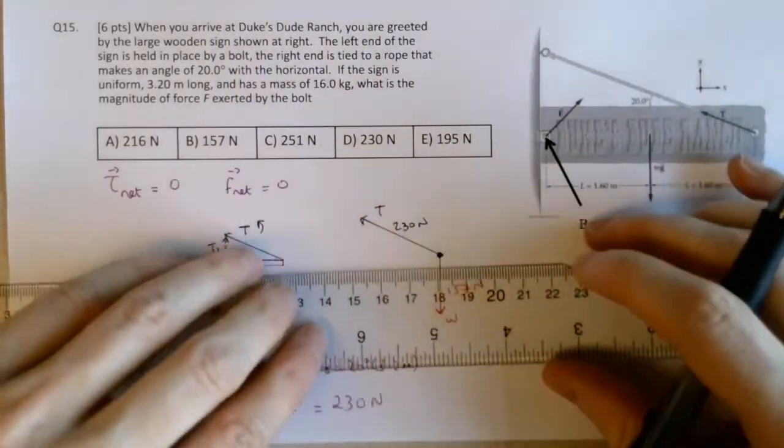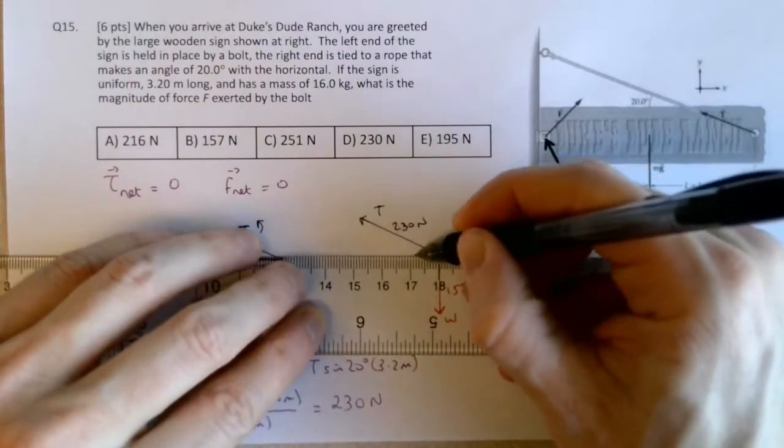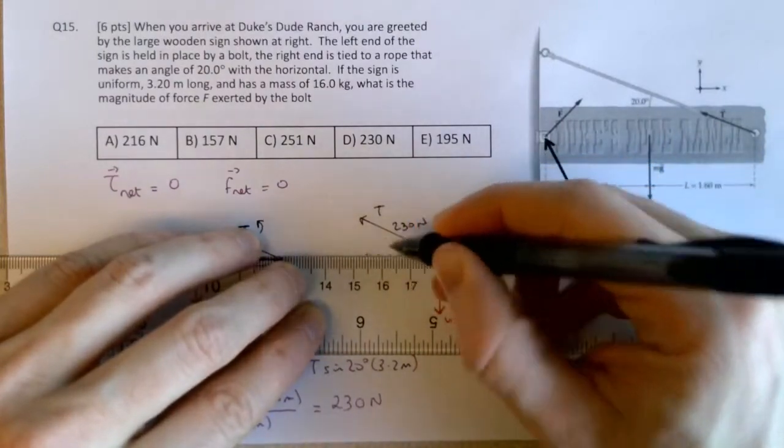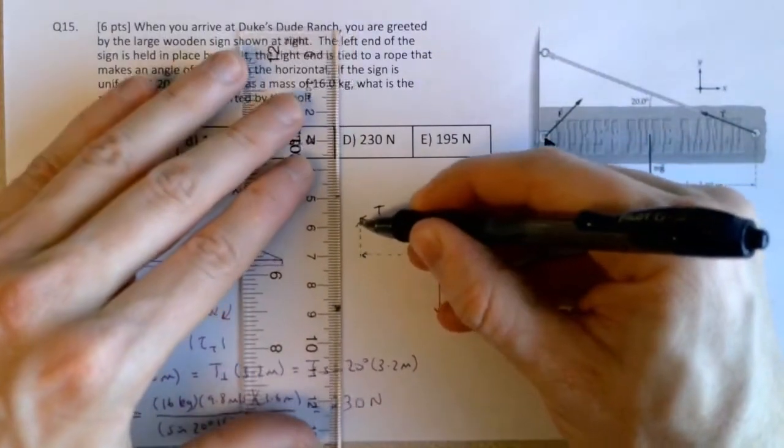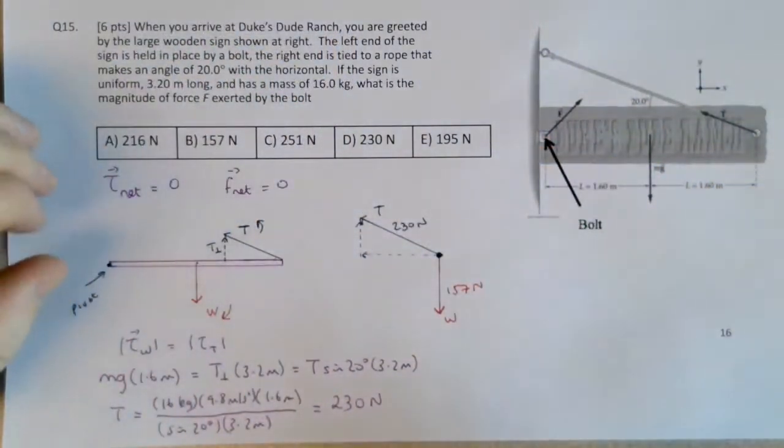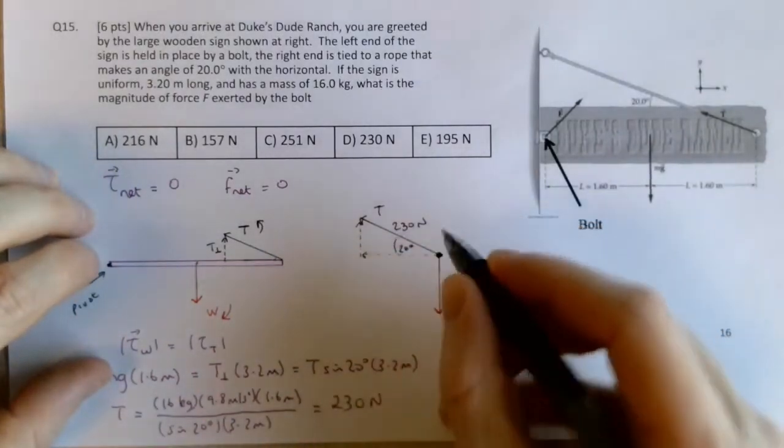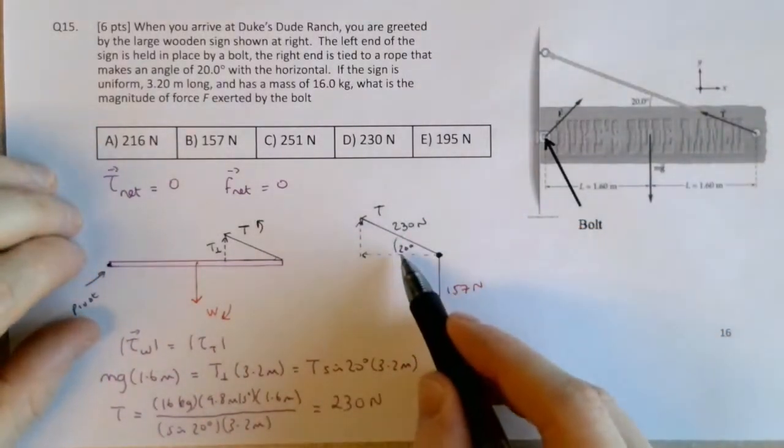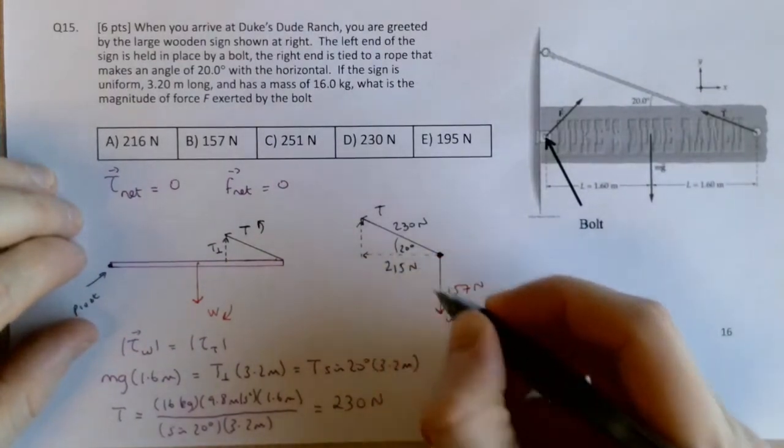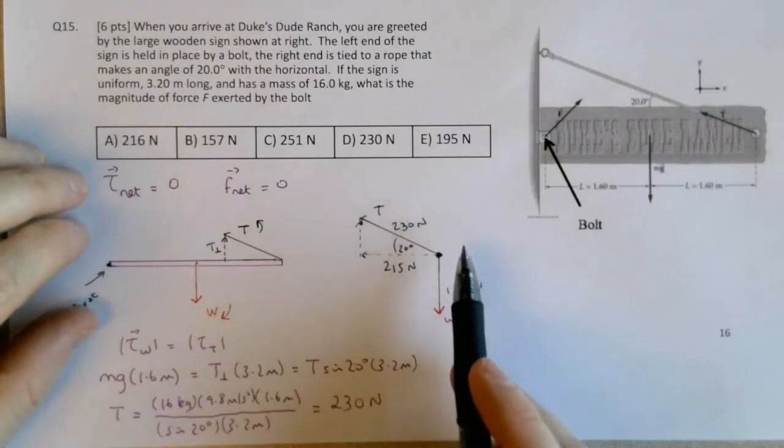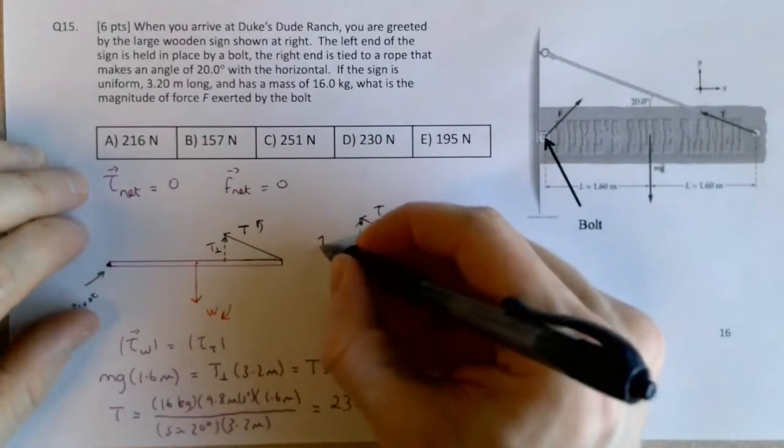And we know that this is going to be 16 times 9.8, so it's 157 newtons. And this is the tension force, which we now know to be 230 newtons. And we can decompose that into x and y components. So if you do 230 times the cosine of 20, you'll end up with 215 newtons. If you do 230 times the sine of 20, you'll get 78.4 newtons.